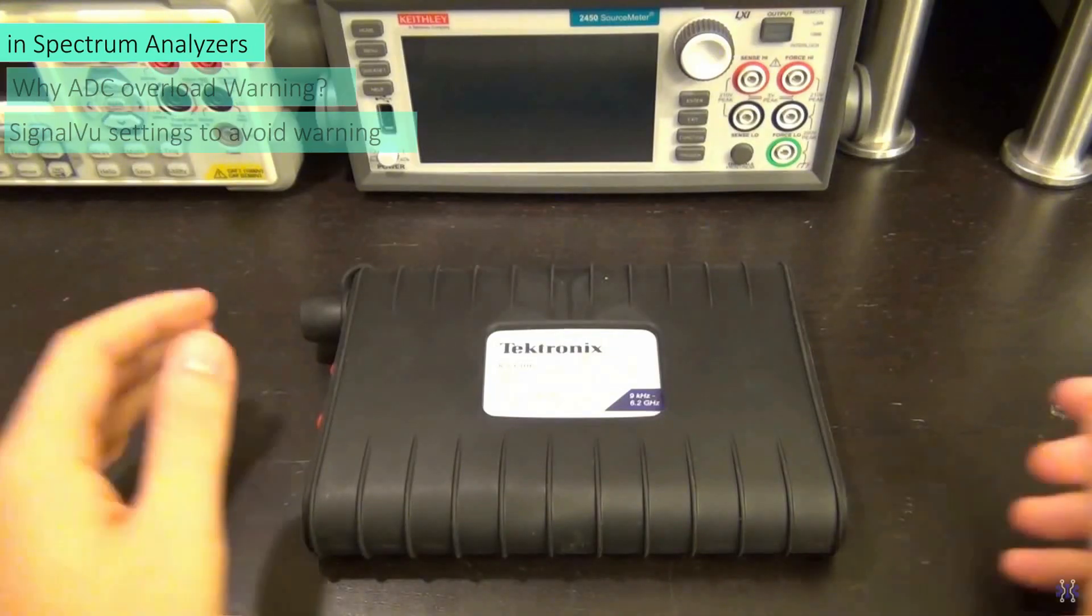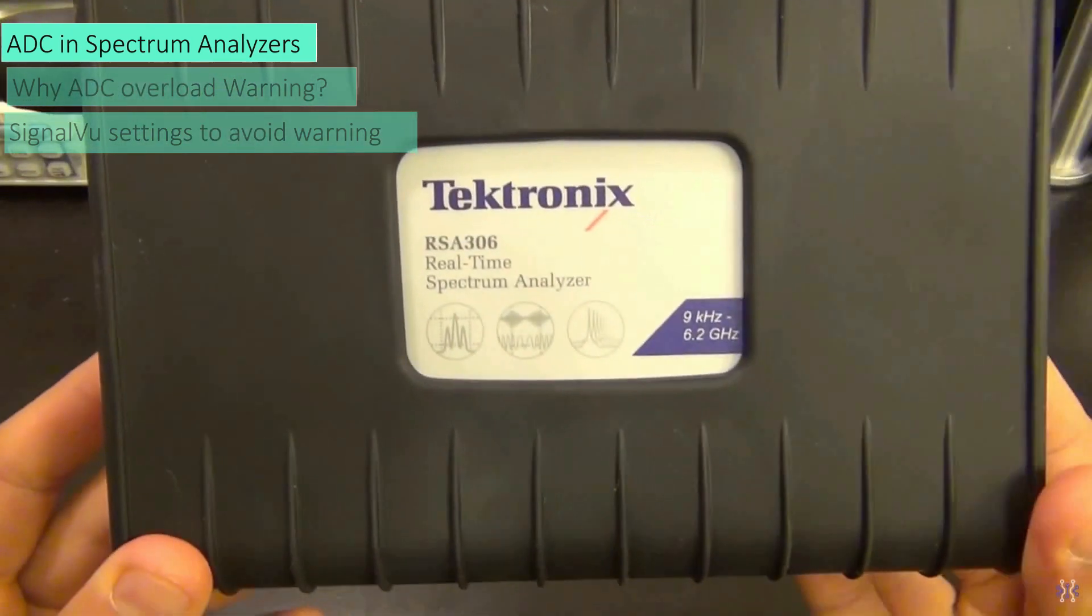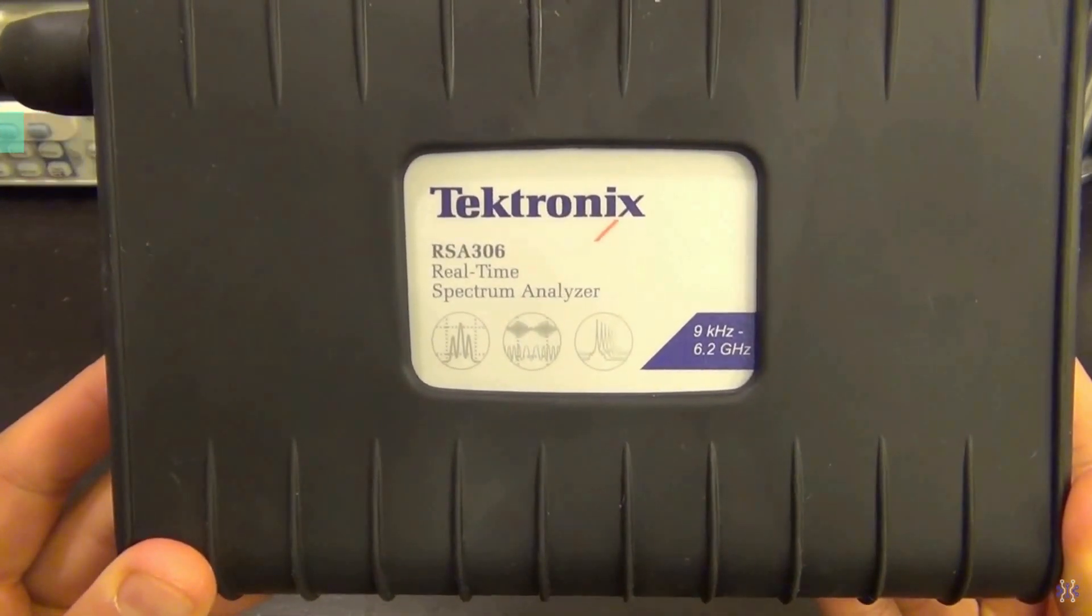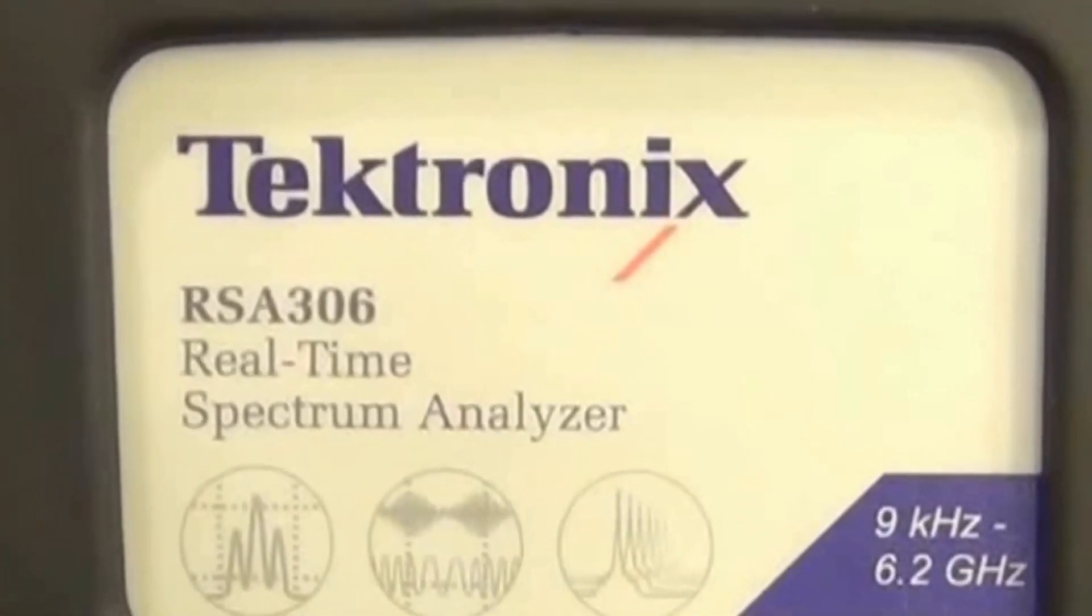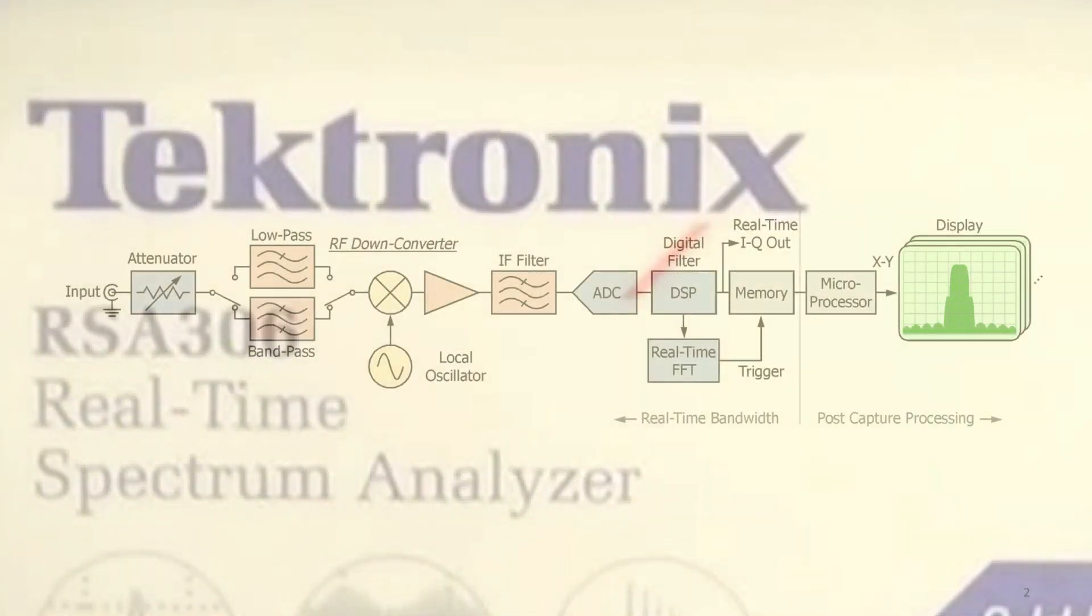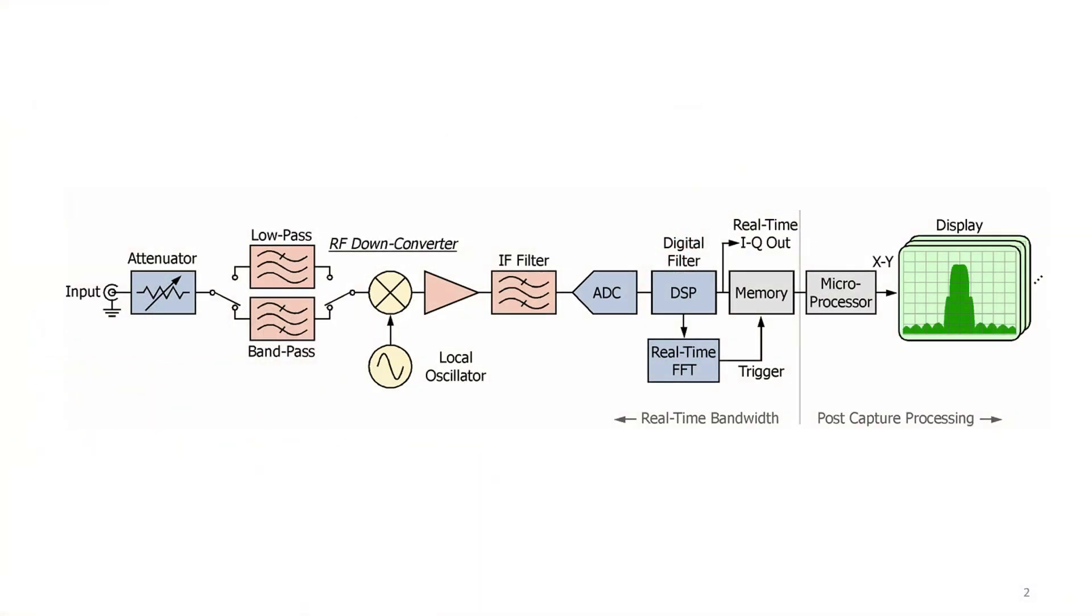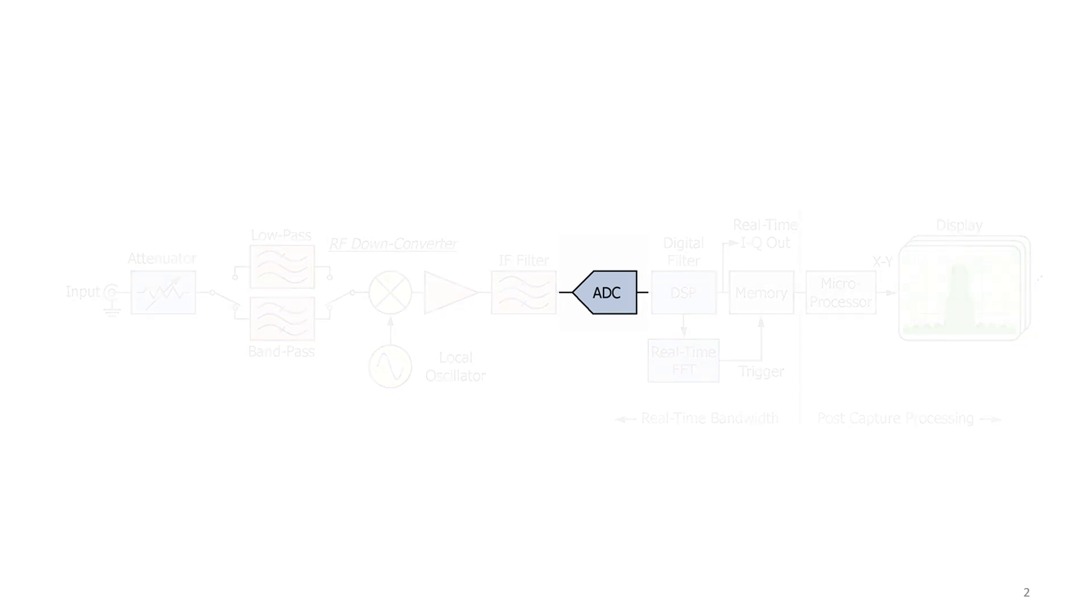Today I have Tektronix RSA 306, a 9 kilohertz to 6 gigahertz real-time spectrum analyzer. Let's look into the Tektronix RSA to understand the RF front end of the real-time spectrum analyzer. The two main important components of the front end are the down converter and the ADC. Let's look into the ADC and its prominence in a spectrum analyzer.